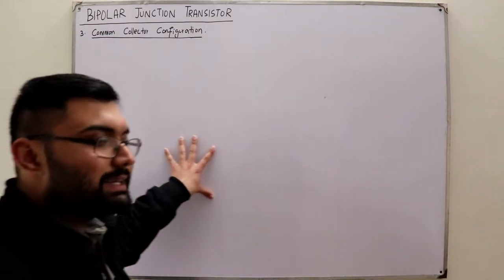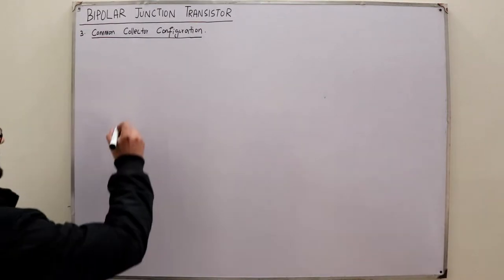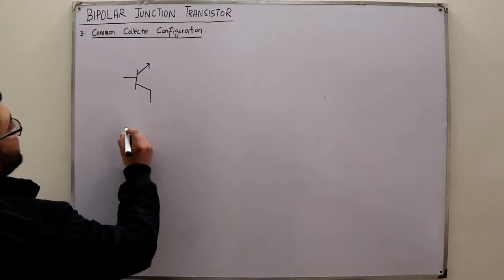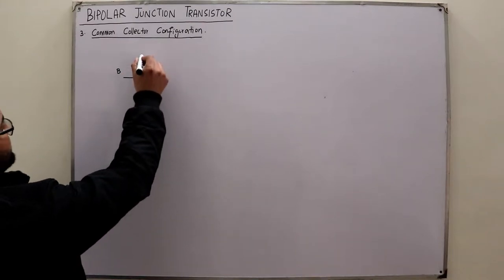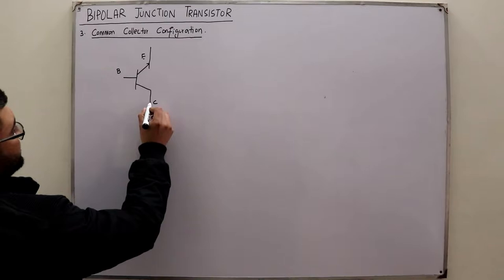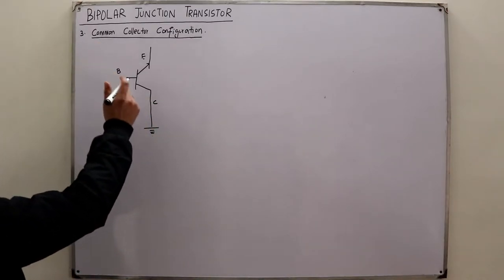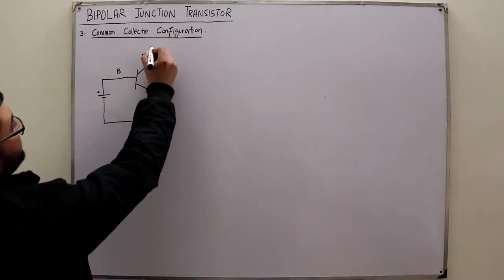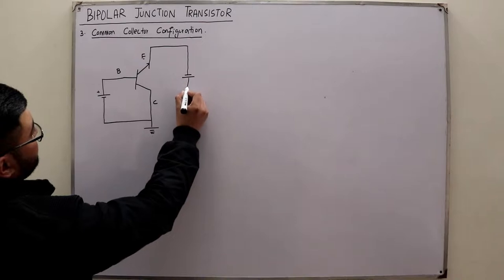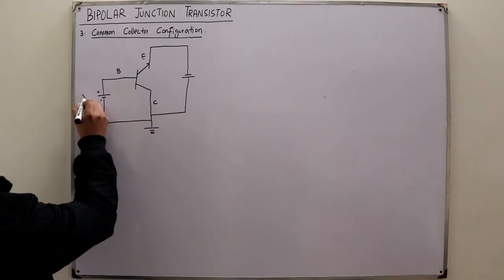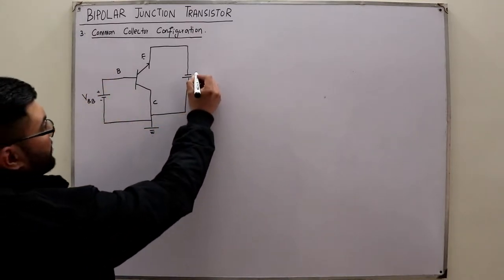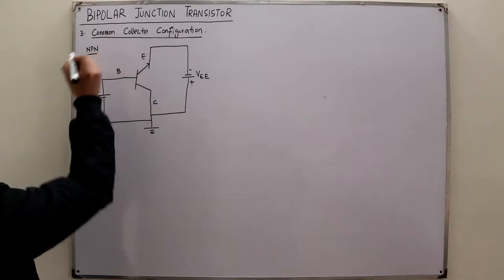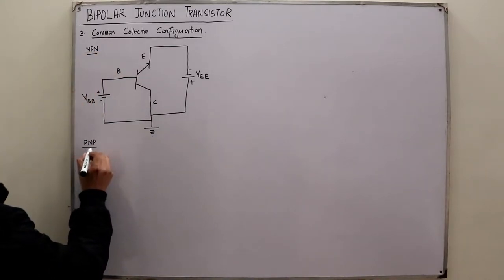In the common collector configuration, the collector is common between the output and the input side. If this is my base terminal, upward is the emitter terminal and downward is the collector terminal. The collector is grounded. The base-emitter junction has to be forward biased, meaning the base is at a higher potential with respect to the emitter. We name the biasing potentials VBB connected to the base and VEE connected to the emitter. This is for an NPN transistor; similarly, you can have it for a PNP transistor.